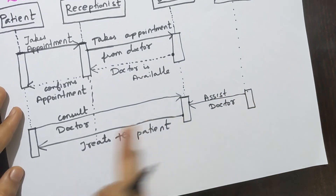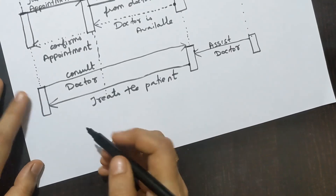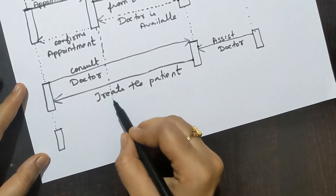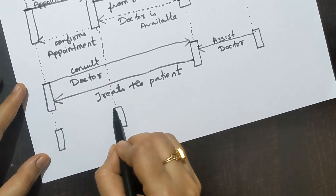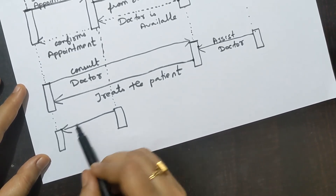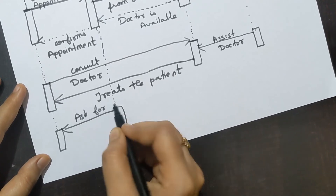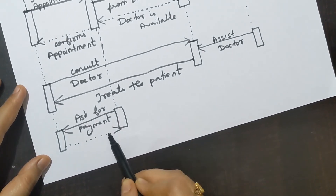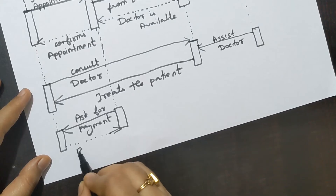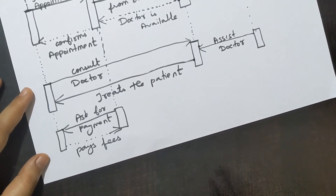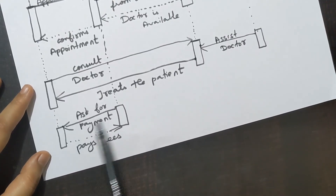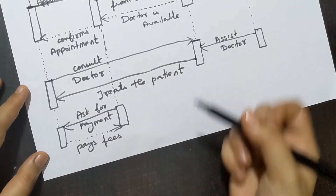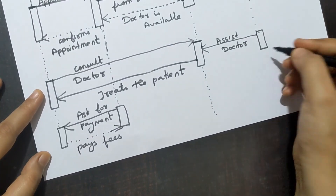Then the doctor's role is to treat the patient. Draw the arrow from doctor to patient a little lower than the 'assisting doctor' arrow, because treating the patient happens after the nurse assists. Next, draw rectangular boxes for the receptionist and patient at the same height — the receptionist is asking for payment. Then draw a dotted line arrow from patient to receptionist and write 'paying the fee.' To the doctor and nurse, put dotted lines and end the diagram.